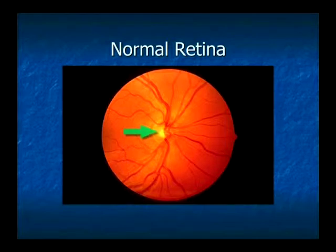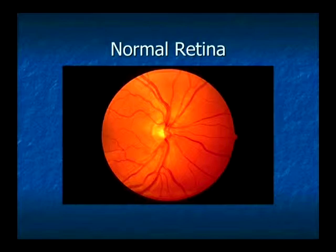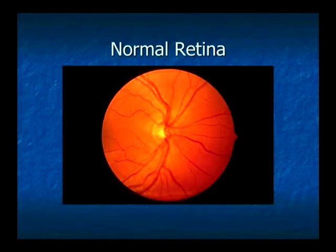Now, this is a normal retina. You can see the optic nerve in the middle — a healthy-looking optic nerve with a quite small pale center, nowhere near as large as the one in the glaucoma slide. This is a wider-angle photo, so you can see all the retinal tissue around the optic nerve. The blood vessels are gracefully curving with a nice, even background — this is the way a retina should look.